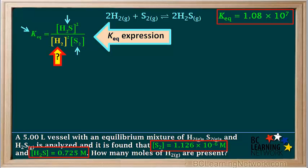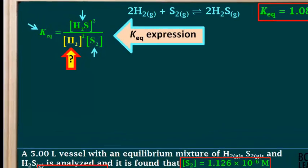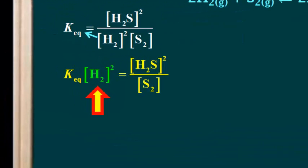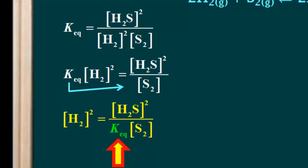We know the values for K_eq, the concentration of H₂S, and the concentration of S₂, and we need to calculate the concentration of H₂. So we need to rearrange this equation and solve for the concentration of H₂. We start by moving the concentration of H₂ squared from the bottom of the right side to the top of the left side. We want to isolate the concentration of H₂, so we move K_eq from the top of the left side to the bottom of the right side.